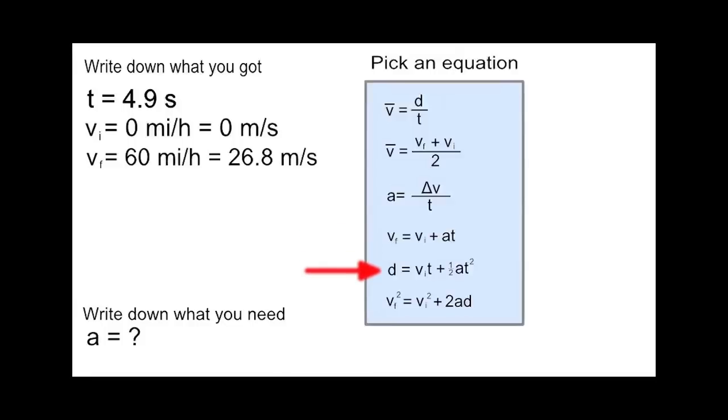This formula has two unknowns, both the distance and acceleration, so we couldn't use it to solve. And the final formula here is also missing both acceleration and the distance. So vf equals vi plus at is the formula we will pick.